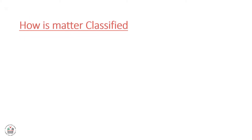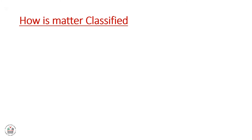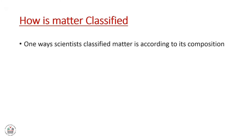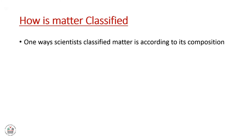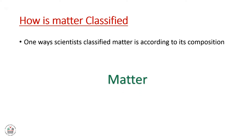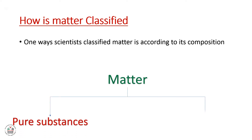How is matter classified? One way scientists classify matter is according to its composition. Matter is classified into two things: pure substances and mixtures.